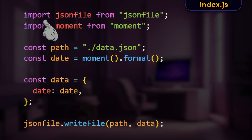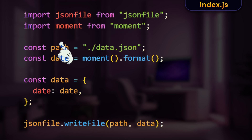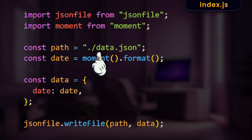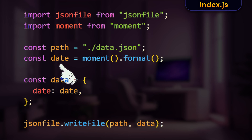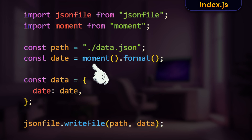First of all, we import the JSON file module. Then we make another constant which stores the path of the JSON file. Then we make another constant called date which stores the timestamp in a format similar to what GitHub stores internally. moment.format basically returns that timestamp that we need.